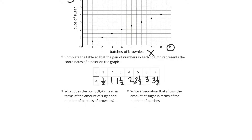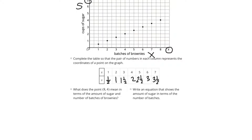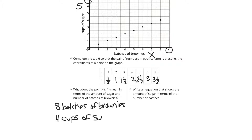What does the point (8, 4) mean in terms of the amount of sugar and number of batches of brownies? Well, (8, 4) would mean 8 batches of brownies requires 4 cups of sugar. Now write an equation that shows the amount of sugar in terms of the number of batches. It looks like we're using half a cup of sugar per batch, so S equals one half times X — S equals ½X.